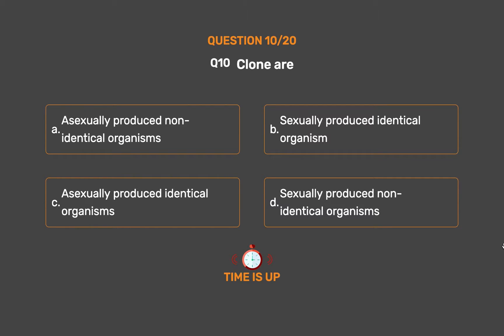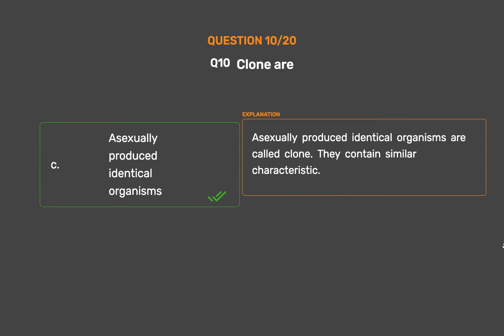The correct answer is Option C – Asexually produced identical organisms. Asexually produced identical organisms are called clones. They contain similar characteristics.